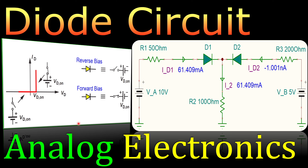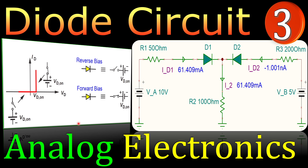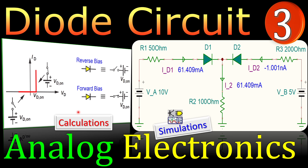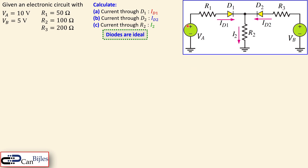Greetings and welcome to a new video about analog electronics. We continue with our diode circuits, and this is our third example. In this example, I will look at a circuit where we have two diodes and also two sources. We will look at our calculations step by step and also verify these in SPICE simulations. Our circuit has two diodes, two sources VA and VB, and three resistors R1, R2, and R3.